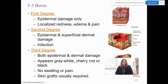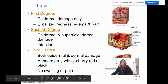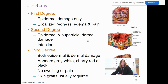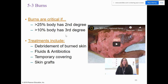First degree burns affect the epidermis and present with redness, edema, and pain. Second degree burns involve epidermal and superficial dermal damage. Third degree burns involve full epidermal and dermal damage — sometimes going even deeper — and appear gray, white, cherry red, or black. There is no swelling or pain because everything is completely destroyed, and a skin graft is required. Burns are considered critical if more than 25% of the body has second degree burns, or more than 10% has third degree burns. Treatment includes debridement of burned skin, fluids, antibiotics, temporary coverings, and skin grafts.